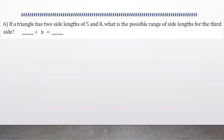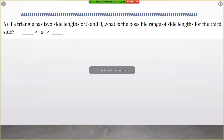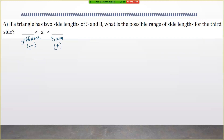Question number six, a two-point question on your test. You're dealing with a triangle with two side lengths of 5 and 8, and we have to find the possible range of side lengths for the third side. To do this, find the difference by subtracting, and find the sum by adding. Side lengths of a triangle can never be negative, so take 8 minus 5 to get 3. On the right side, 8 plus 5 gives you 13. So for this to be a triangle, the third side would have to be between 3 and 13.